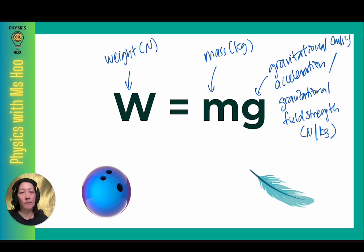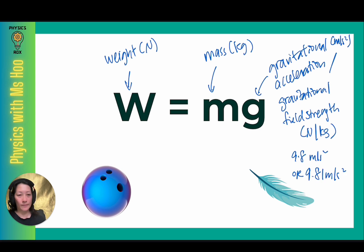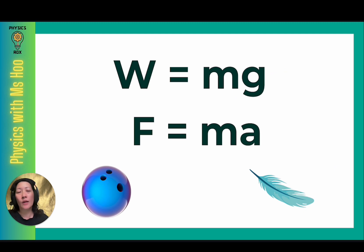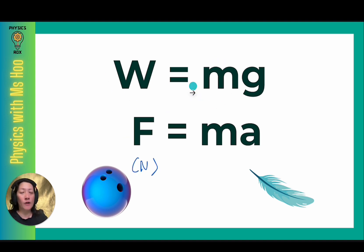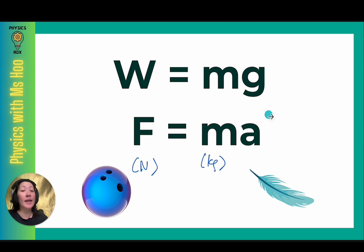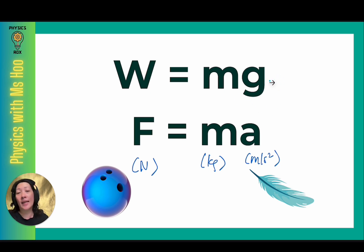The value of g, depending on the syllabus that you're studying, could be 9.8 or 9.81. Now if we look at this formula, you should see a similarity between the weight formula and the force formula — weight is essentially a type of force, and they're both measured in newtons. m is the mass, and g, the gravitational acceleration, is a type of acceleration. Whereas a represents acceleration in general, g is specifically the acceleration caused by gravity — that's why it's known as gravitational acceleration.